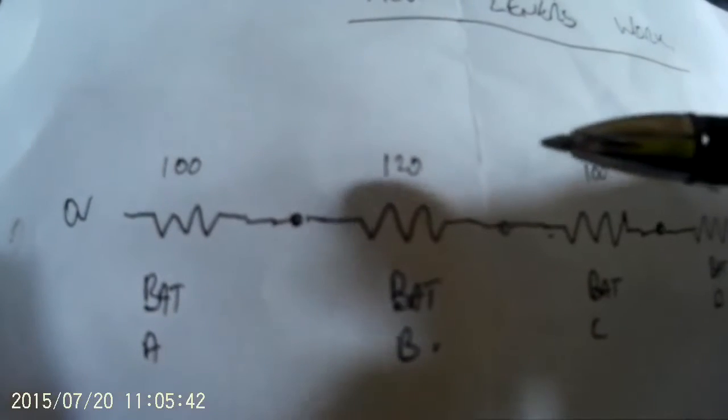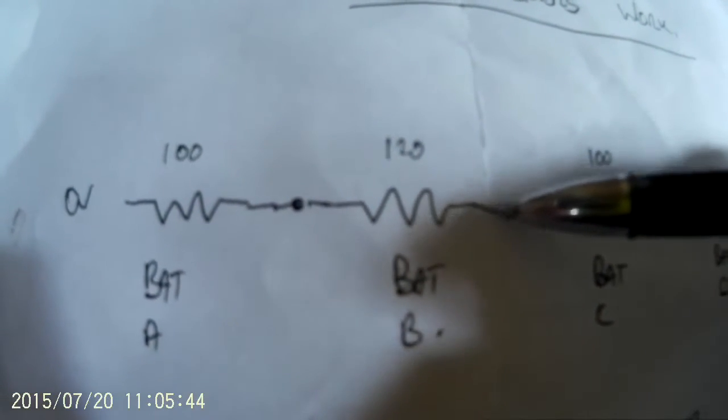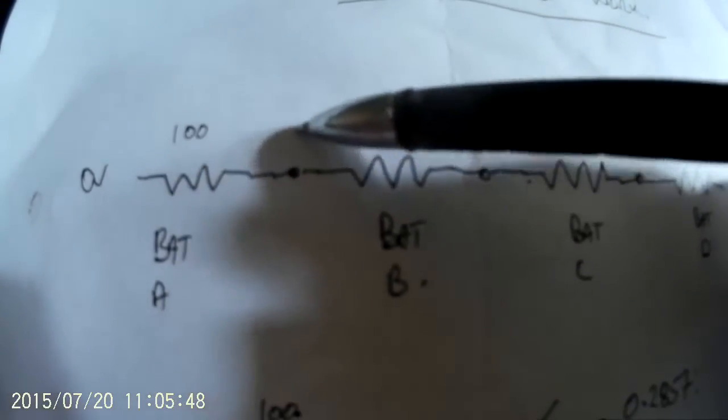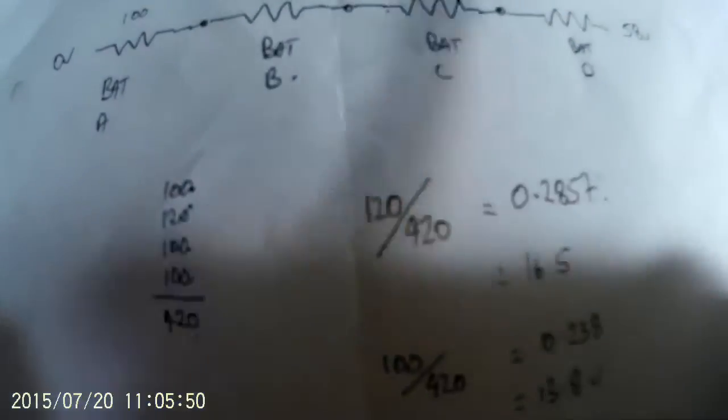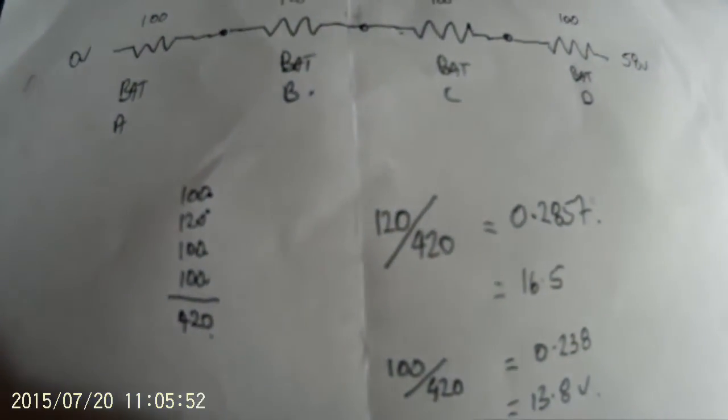If you actually do the maths, what you're creating there is a voltage divider. So 100 plus 120 plus 100 plus 100 equals 420. So to work out the voltage at this point, the voltage across that battery is 100 divided by 420, sorry, 120 divided by 420 equals 0.2857.